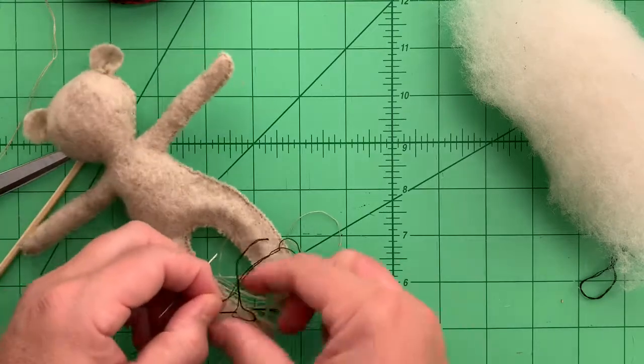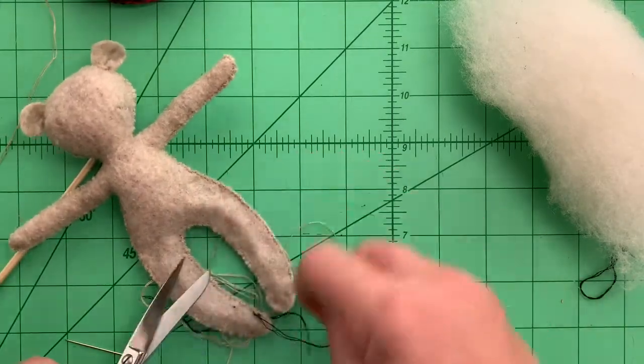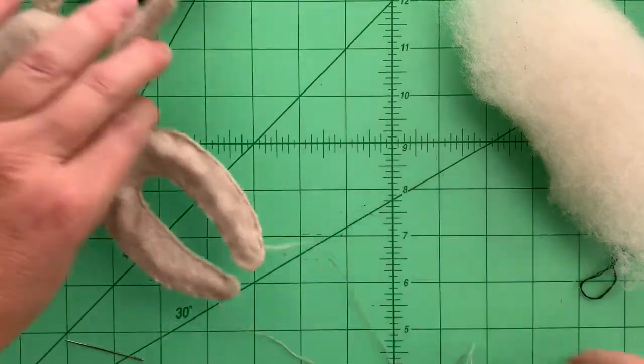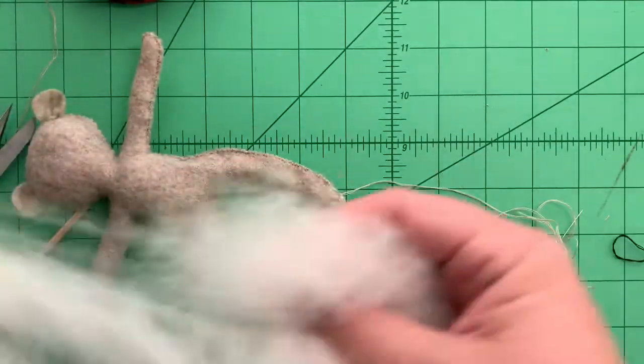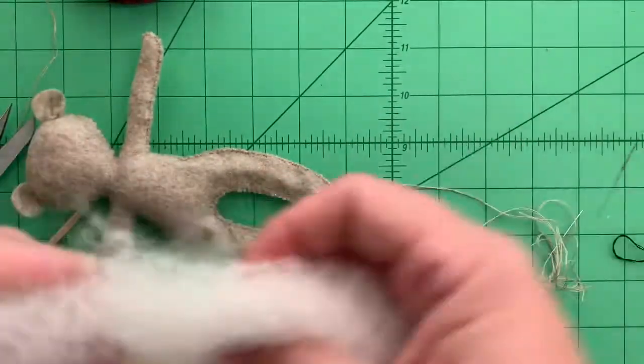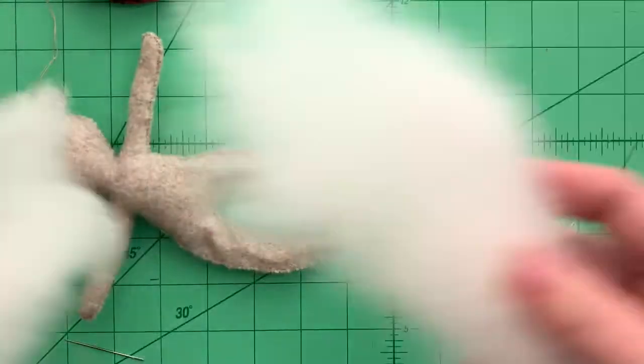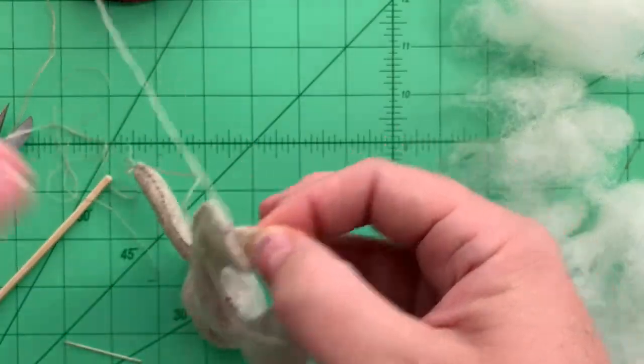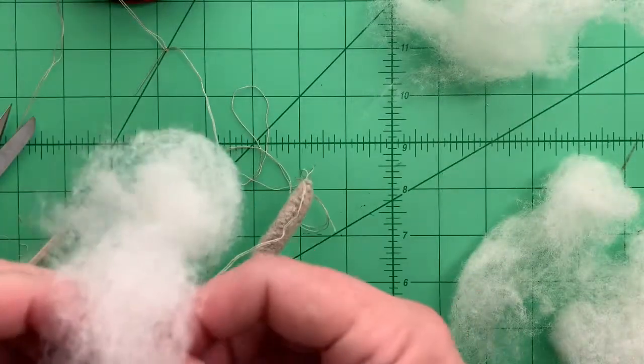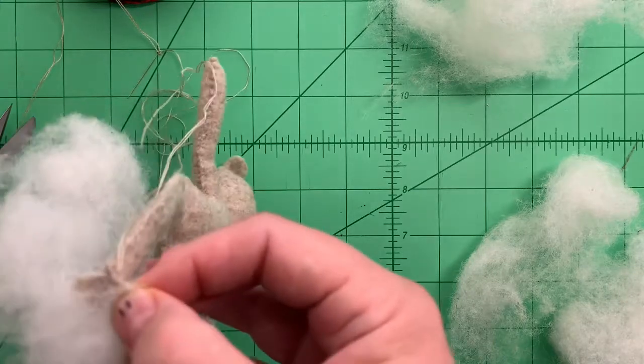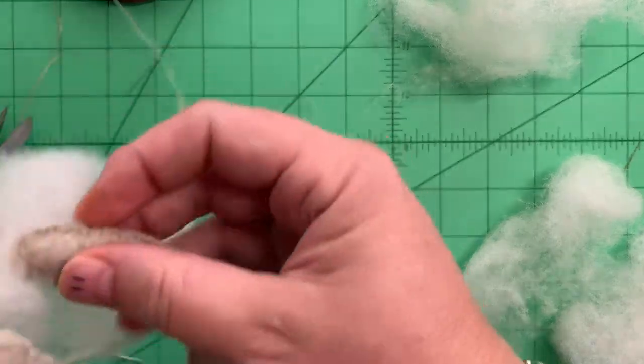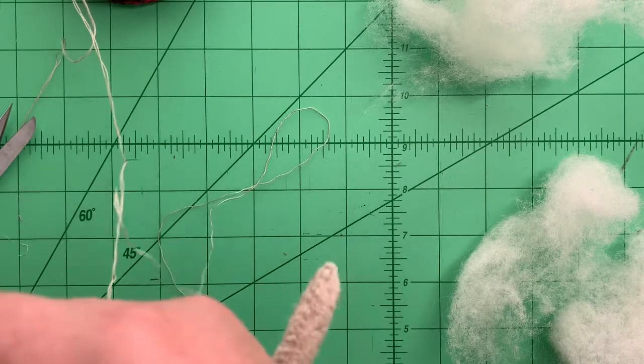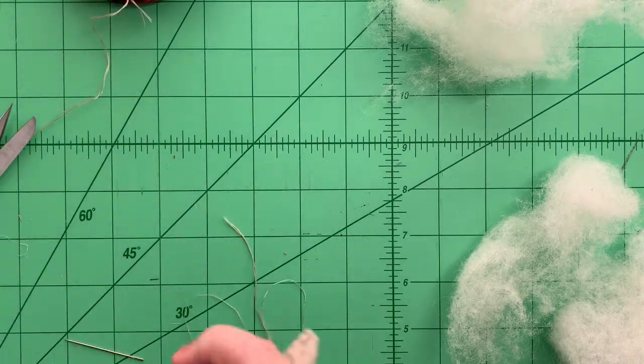Now we're going to grab some roving and we're going to do the same thing. We're just going to shred this up into tiny pieces and using the blunt end of our skewer, we're going to open one of his little toes and start filling our little guy's legs and get that into his belly. Once you get the roving started it goes in pretty good.